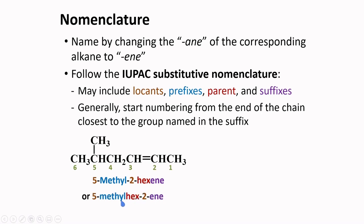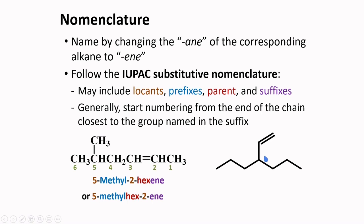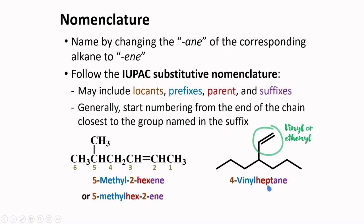This can also be named as 5-methyl-hex-2-ene; both are acceptable under IUPAC rules. If the chain containing the double bond is connected to another chain which is considered to be longer, this group will be a substituent. The common name for this group is vinyl, or ethenyl. Thus, we can call this compound 4-vinylheptane or 4-ethenylheptane.